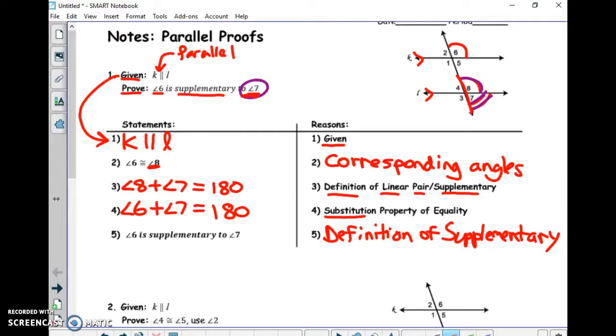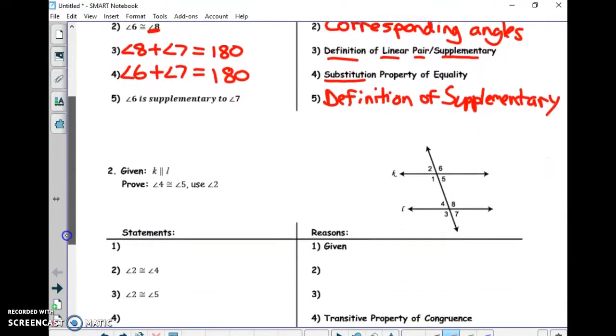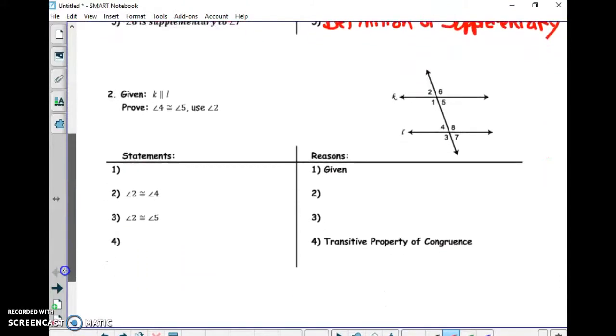Let's do number two. Number two is going to be a little bit easier than number one because number two has one less step and we're proving congruence. On number two, what's my first step always going to be? Given, with enthusiasm. Step one is always given. What am I going to write right here? K parallel to L.